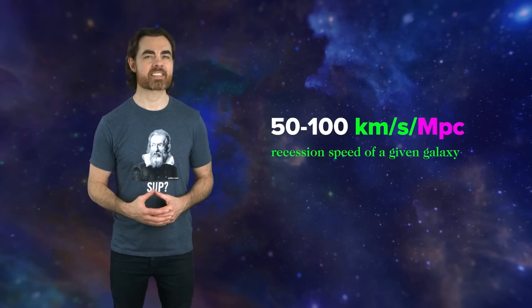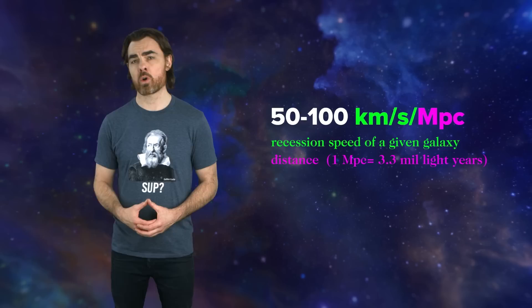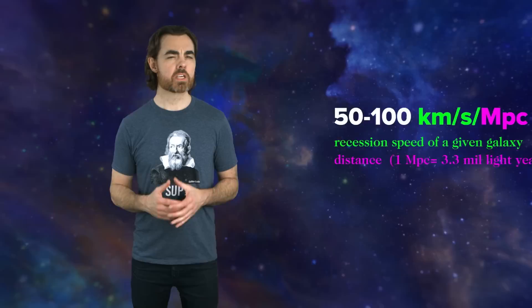Kilometers per second, that's for the recession speed of a given galaxy. Megaparsecs is for its distance, with one megaparsec being around 3.3 million light years. If the Hubble constant were, say, 75 kilometers per second per megaparsec, then for every one megaparsec distance, we expect the galaxy to be retreating from us at an additional 75 kilometers per second.